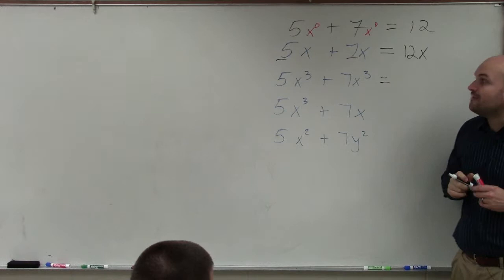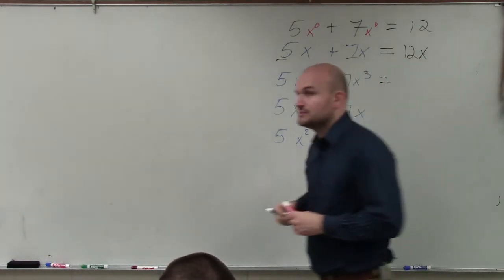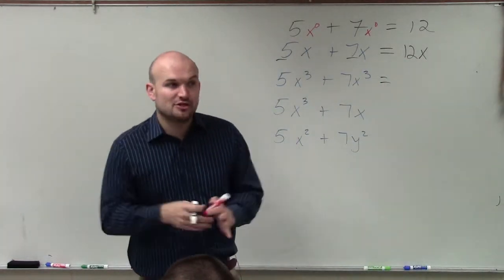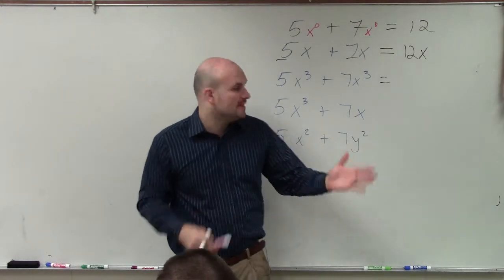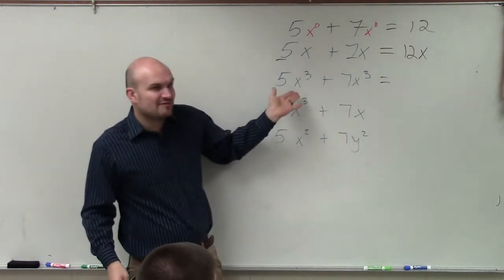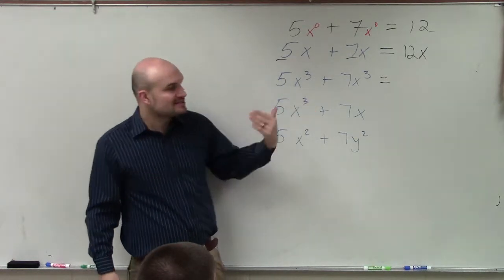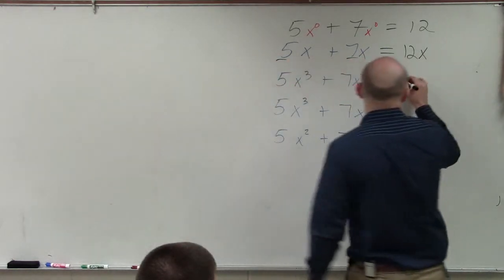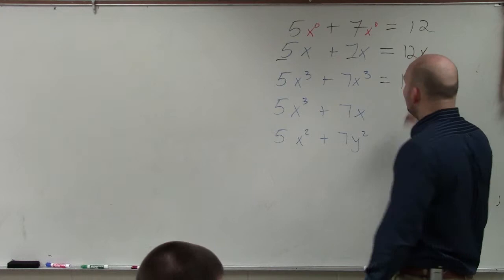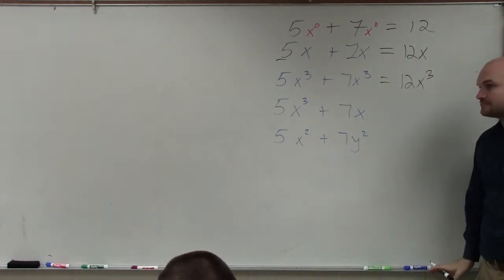For instance, another example, 5x cubed plus 7x cubed. The variable factors for x cubed is x times x times x. They both have the same variable factors. So they're what we call like terms. Since they're like terms, we can add them to give us 12x cubed.